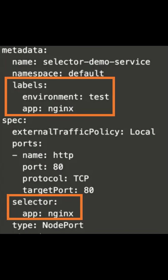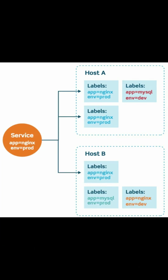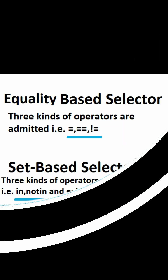Selectors allow us to select Kubernetes resources based on the value of labels and resource fields assigned to a group of pods or nodes. Labels do not provide uniqueness, so many objects can carry the same label. Label selectors are used by users to select a set of objects or resources. The label selector is the core grouping primitive in Kubernetes.